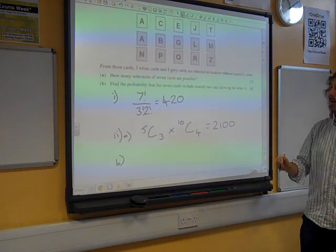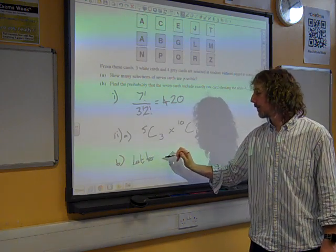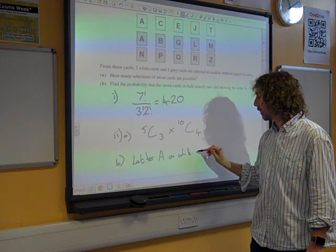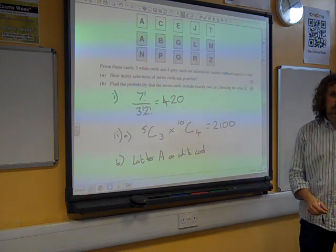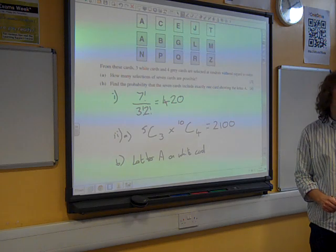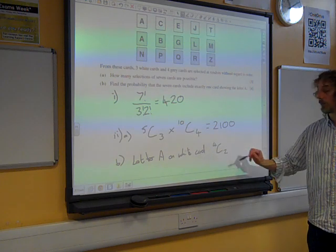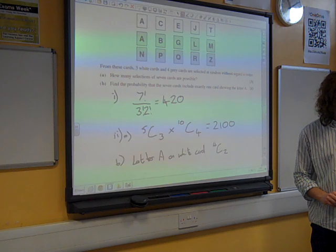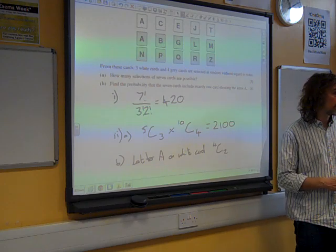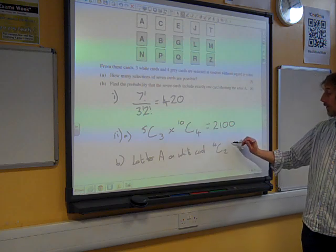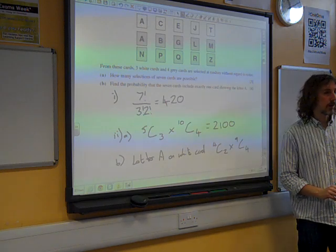Right, so let's think of these two options. If we choose the first option, where the letter A is on a white card. So if we're definitely choosing the letter A on a white card, that means that there are two other white cards chosen from the remaining four. And when we think about the grey cards, that means we're picking four grey cards, but the letter A is not one of them. So we're choosing four grey cards from the nine that are left if we're ignoring the letter A. Does that make sense?